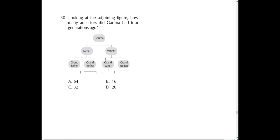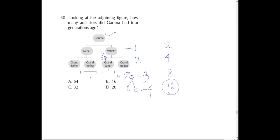Question 30: how many ancestors did Garima have four generations ago? In the first generation she has 2 ancestors (parents). In the second generation: 4. Third generation: 8. Fourth generation: 16. Each generation doubles, so four generations ago Garima had 16 ancestors, which is option B.